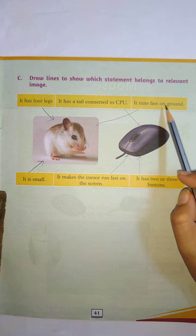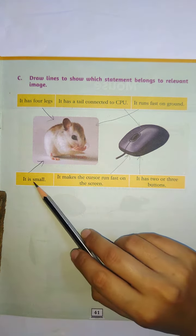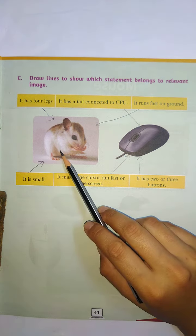It has a tail connected to CPU. Computer mouse. It runs fast on ground. So real mouse. It is small. Real mouse.